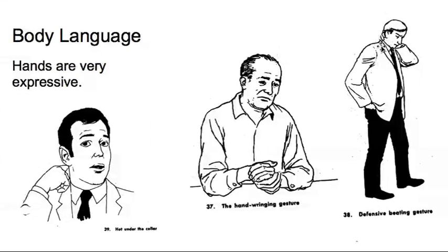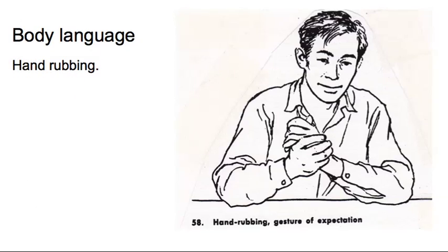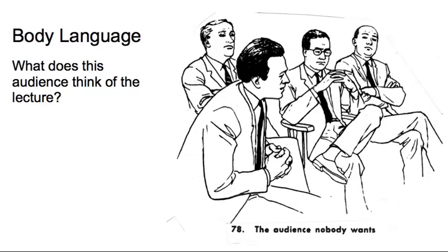It's a standard piglet gesture because he's worried and nervous. Here's a defensive beating gesture, somebody rubbing the back of their neck. Nervous, anxious, worried. Hand-rubbing can also be a gesture of expectation, looking forward to something if it's done slightly differently.